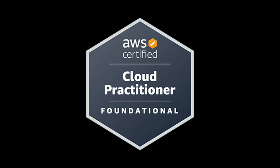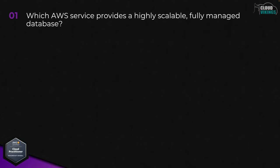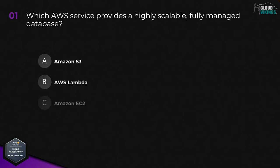For our first practice exam question, let's slowly walk through it as an example of what I was just talking about. After that, if you like the format of pausing the video and doing the review, you can continue on with the rest of the questions in a way that works for you. So the first question: which AWS service provides a highly scalable, fully managed database? This is the point where you should pause the video and try to see if you can come up with the answer on your own. When you've written the answer down, unpause the video to reveal the possible answers.